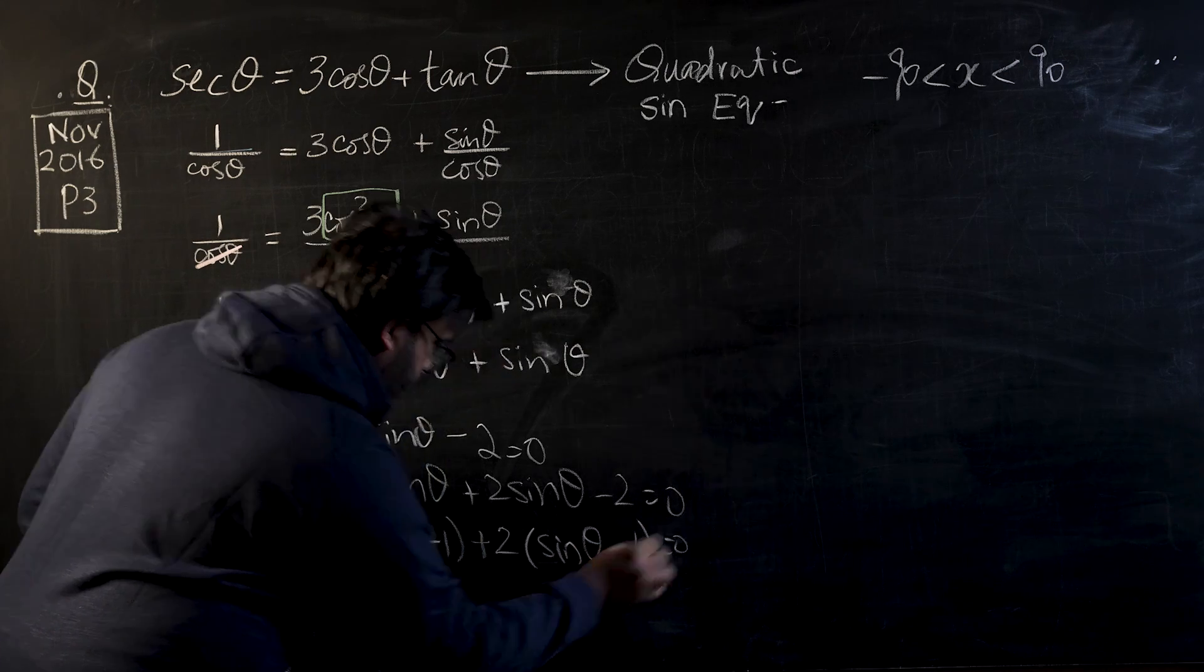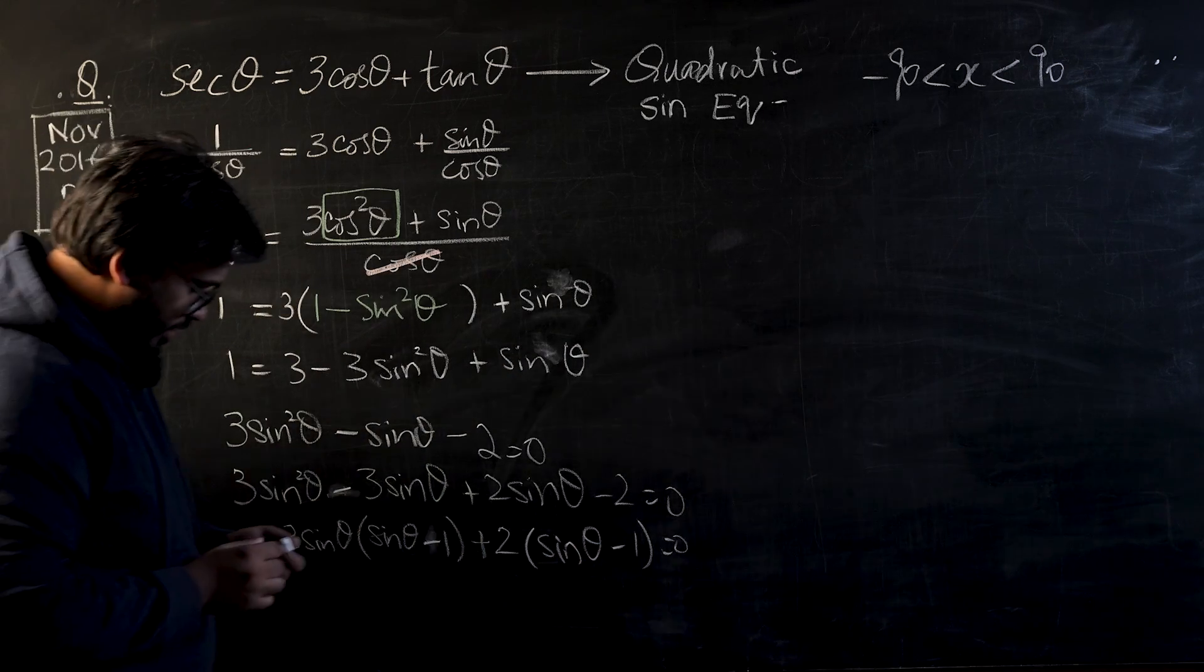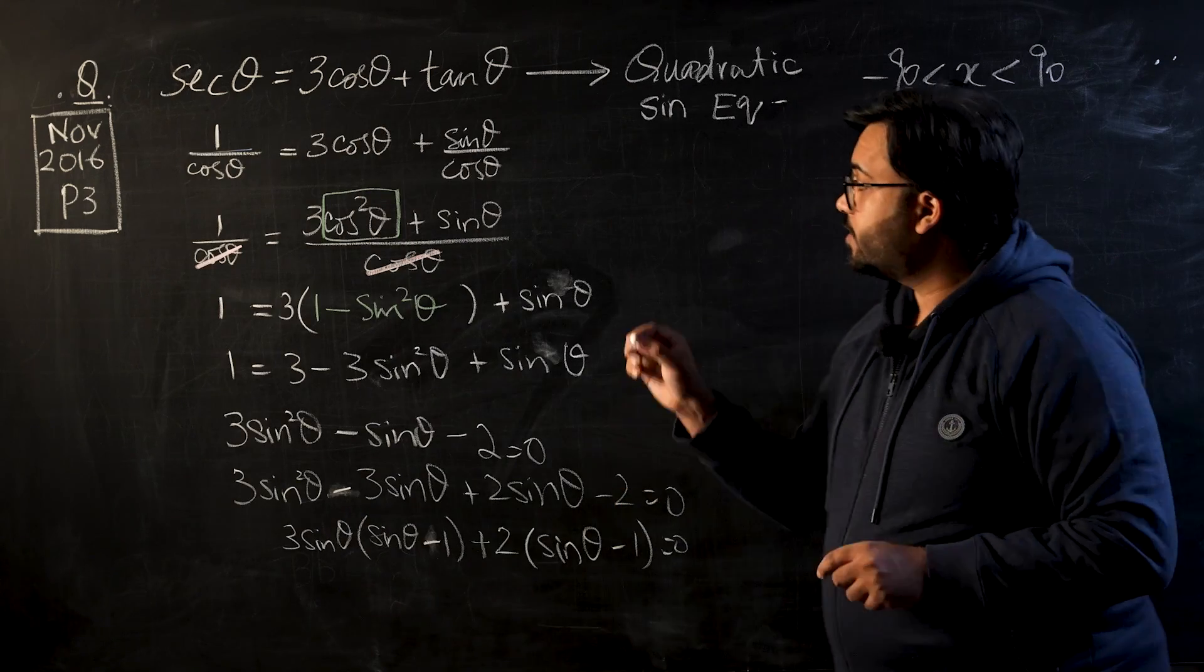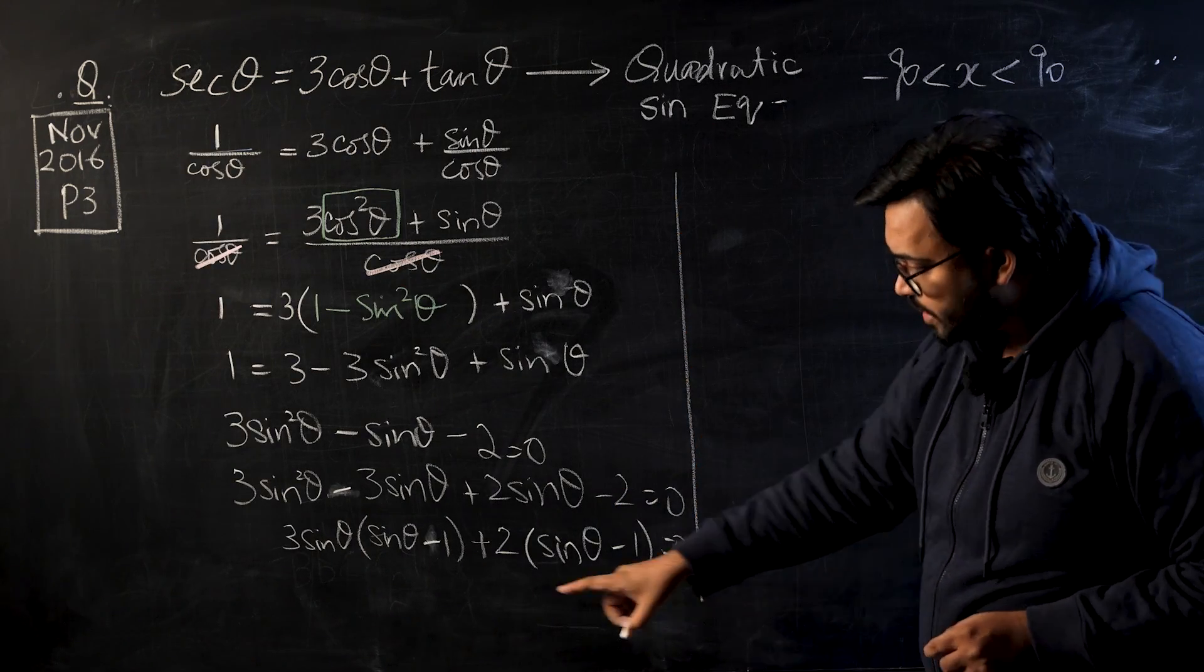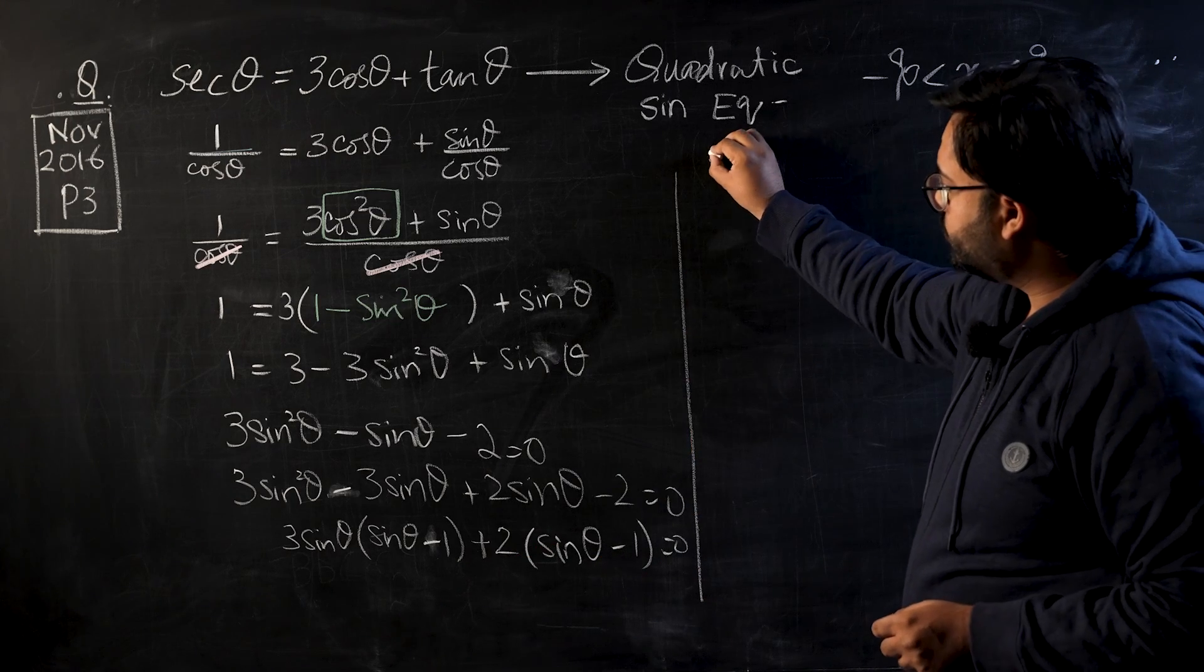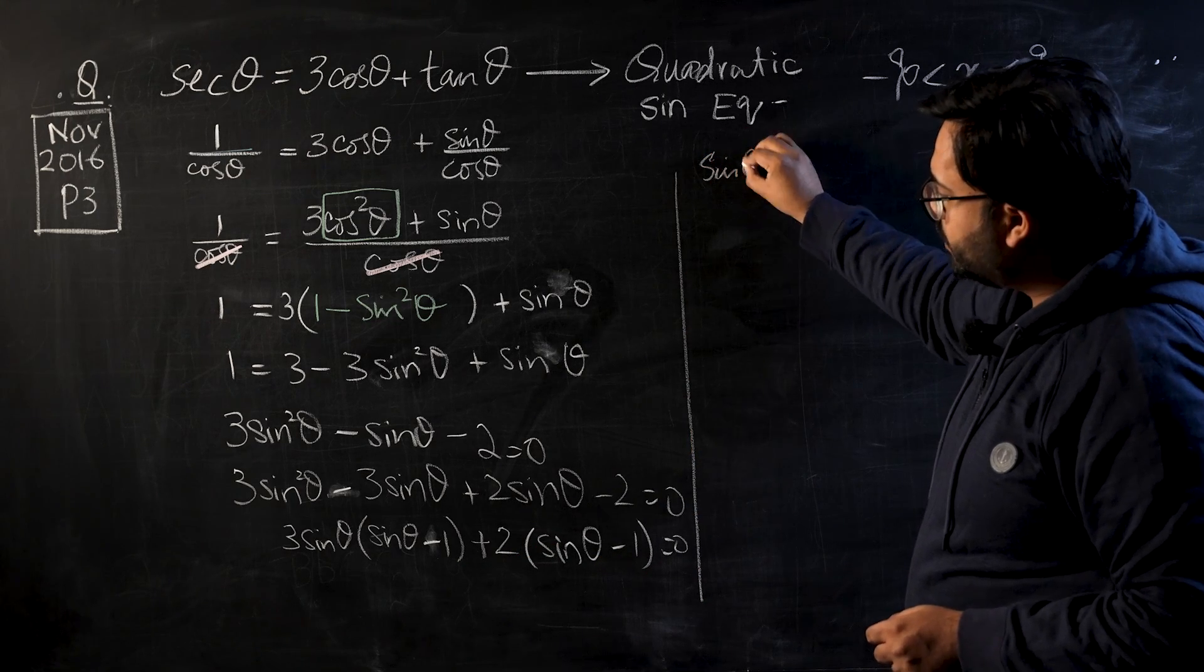This should be minus one over here. Two will become common, so this will become sin θ minus one equals zero. Now we have solved this quadratic. Let's bring this to the next side and try each factor.